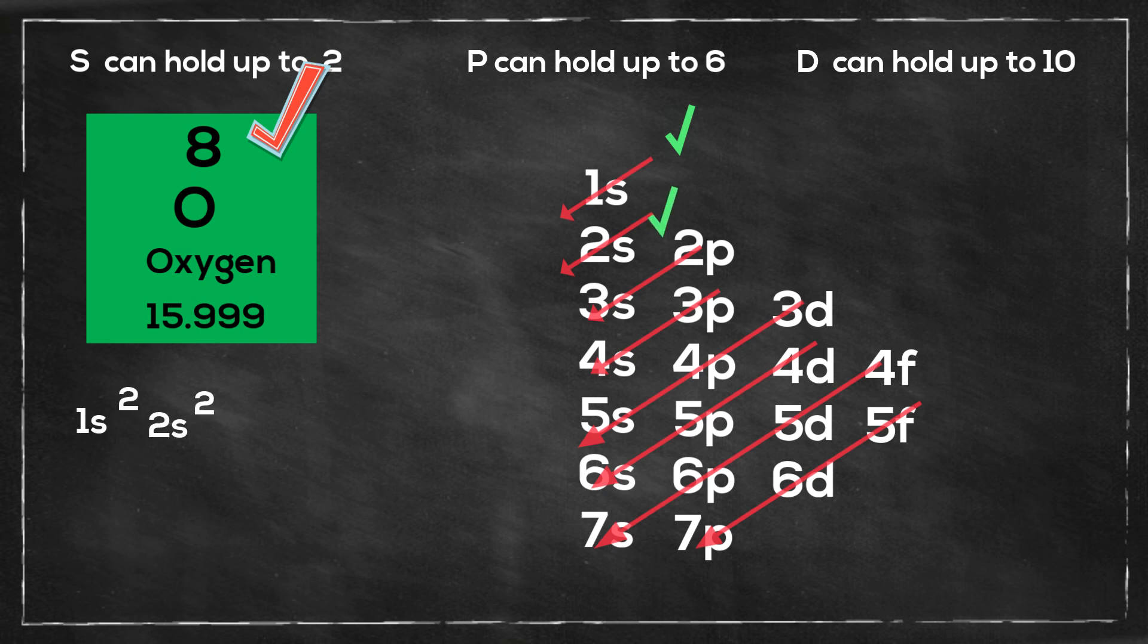Next we go to 2p, and we have already used up 4 of the electrons, so it will be 2p4. And if you write it using the noble gas, here's what it looks like.